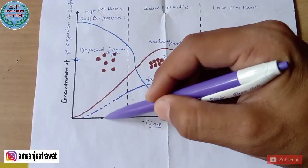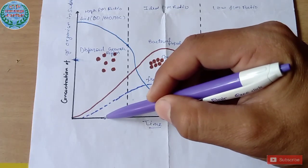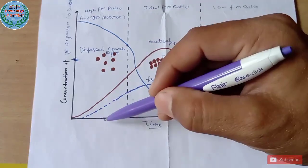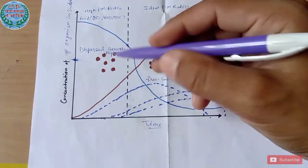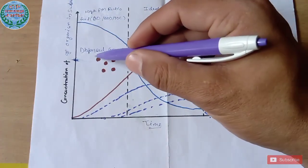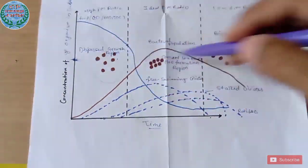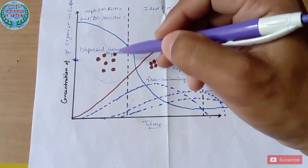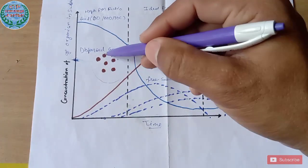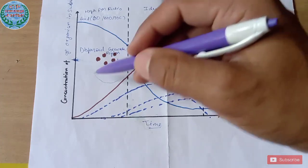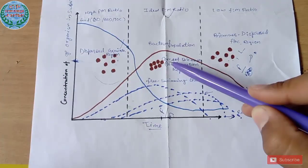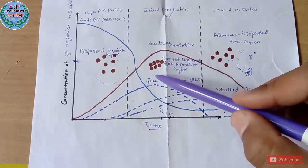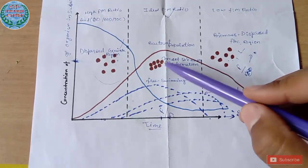The graphic shows how the bacterial population relates to the food supply. As you can see, a very high FM ratio or a very low FM ratio will result in dispersed floc that will not settle well in the secondary clarifier. At the ideal FM ratio, you can see a dense floc of bacteria.